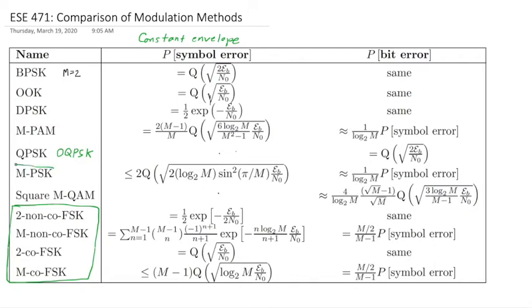Oh sorry, M-PSK is also can be used as a constant envelope if we do offset M-ary PSK.